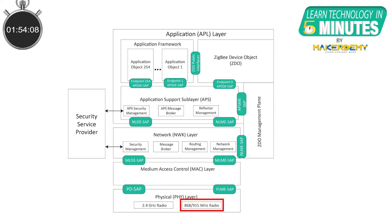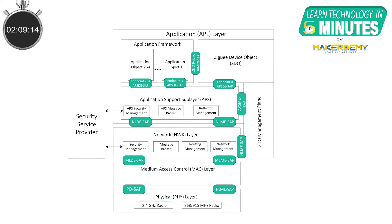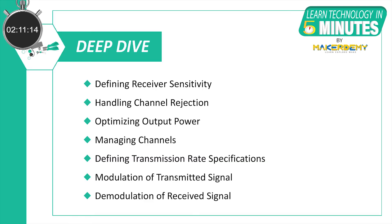The lower frequency sublayer covers both the 868 MHz European band and the 915 MHz band used in countries like the US and Australia. The higher frequency sublayer is used virtually worldwide and uses the 2.4 GHz band. The physical layer is responsible for defining the receiver sensitivity, channel rejection, output power, number of channels, and transmission rate specification. The layer is also responsible for modulation and demodulation operations upon transmitting and receiving signals respectively.